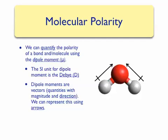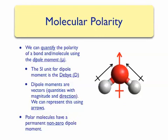Vector quantities such as dipole moment may be added up to describe an overall dipole moment for a molecule. If we add up the dipole moment arrows for water, we find that the overall dipole moment is pointing towards the oxygen. This makes sense since oxygen is more electronegative than hydrogen, so we would predict that more electron density will be around the oxygen atom. A polar molecule will have a permanent non-zero dipole moment. Water is a very polar molecule — it has a dipole moment of about 1.85 Debye.